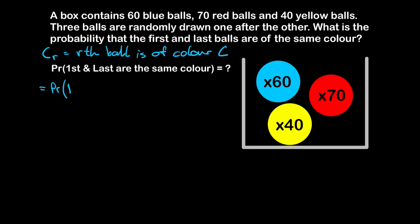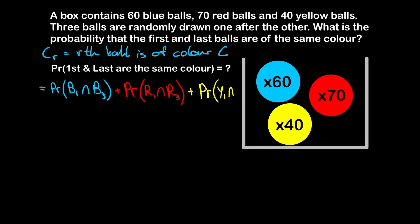We're looking for the probability that the first ball is blue and the last ball is blue, plus the probability that the first ball is red and the last ball is red, plus the probability that the first ball is yellow and the last ball is yellow.